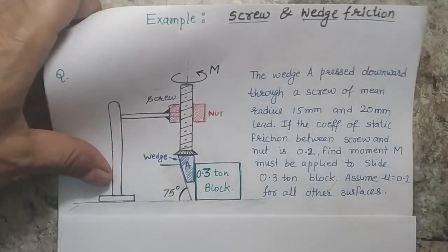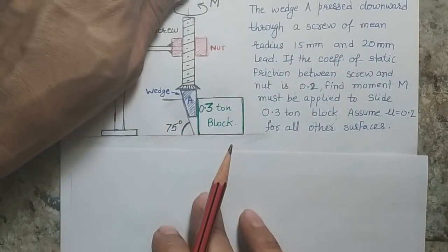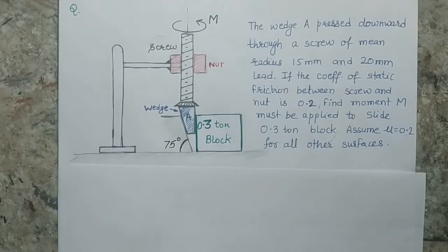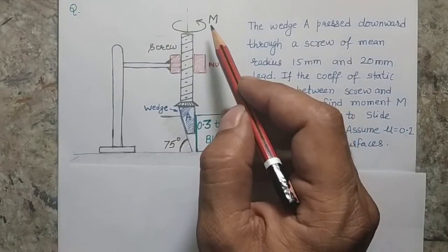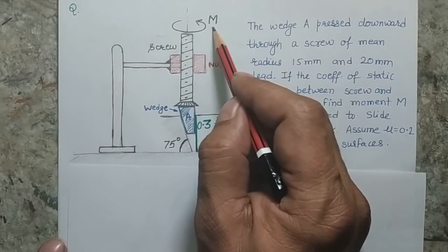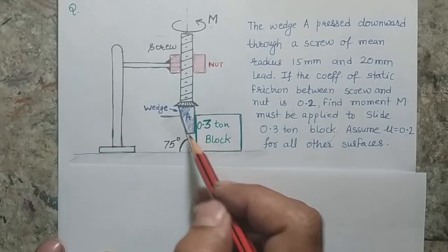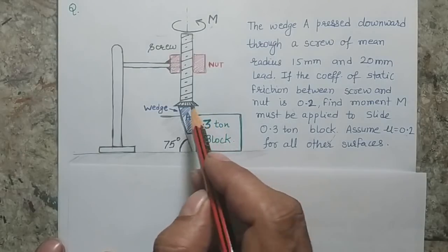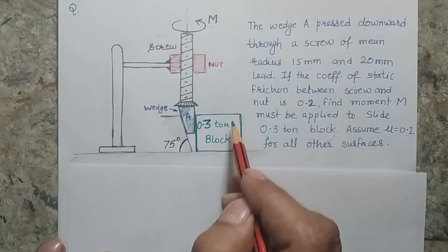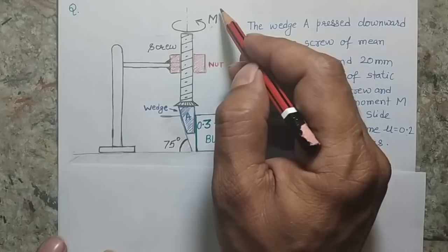This problem has two sections: one related to the wedge part and another related to the screw part. Since M is the ultimate goal, we start with the wedge problem. Once we solve the wedge problem, we can get the force required to push the block. Once we get that force, it will be used to find M.